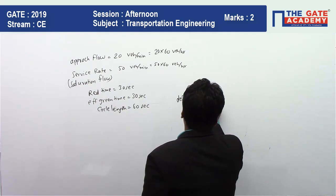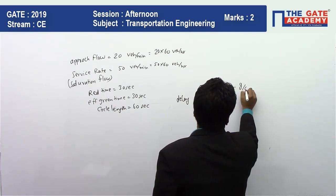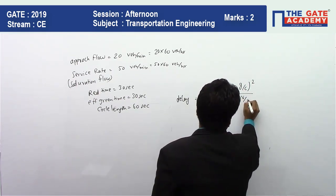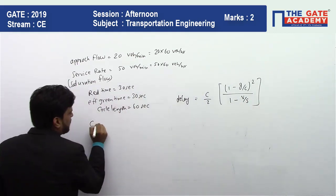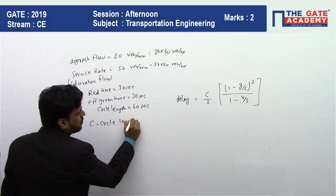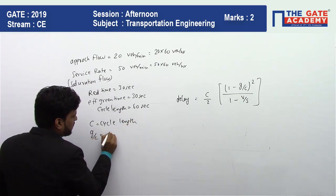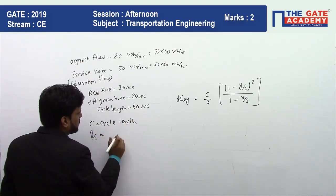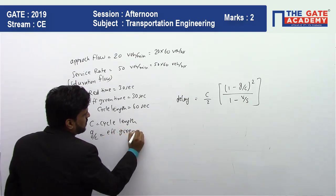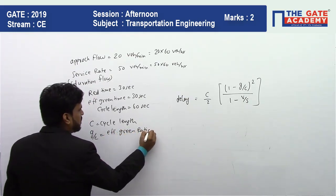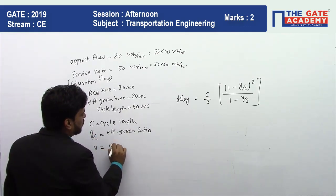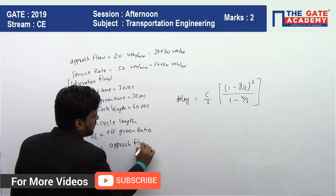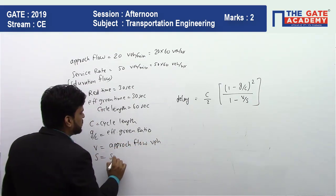The formula is: delay = (c/2) × (1 − g/c)² / (1 − v/s), where c is the cycle length, g/c is the effective green ratio (g is the effective green time, c is the cycle length), v is the approach flow in vehicles per hour, and s is the saturation flow in vehicles per hour.